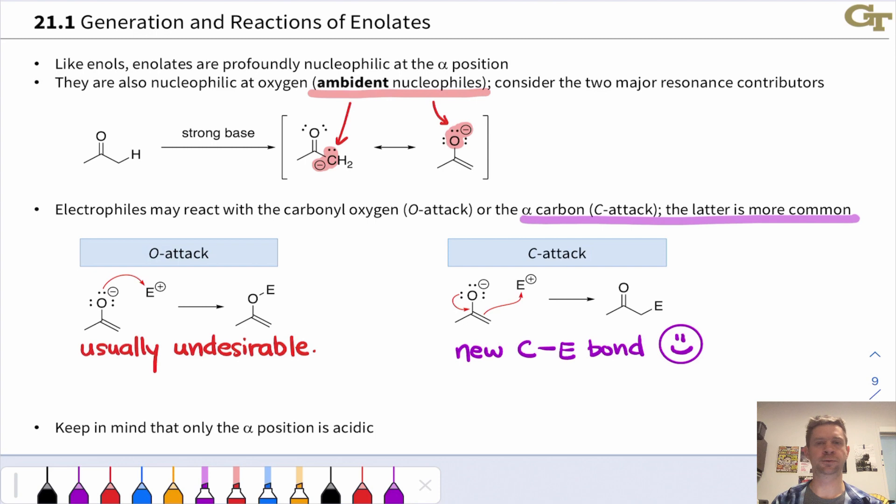The vast majority of, for example, research efforts and reaction development efforts over the years have been centered on encouraging and optimizing for formation of this carbon-E bond, what we'll call C-attack. And pretty much from here on out, we'll very, very rarely see O-attack.